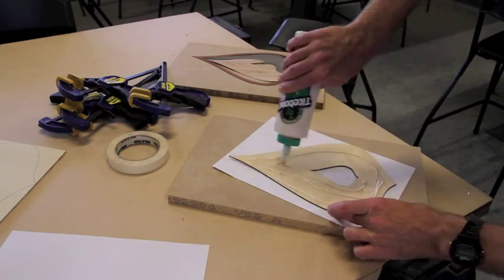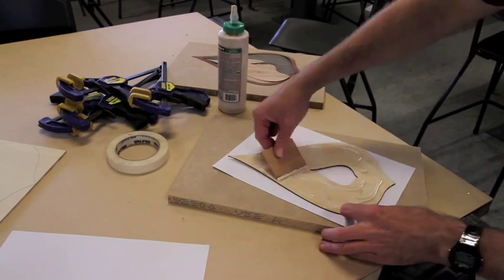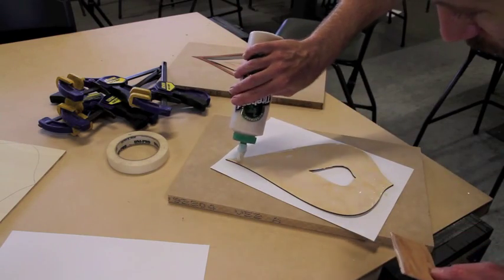Spread the glue out very evenly over the entire surface of that soundboard. It's very important that every square millimeter of that soundboard is covered otherwise some of the veneers will pull up.